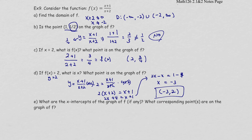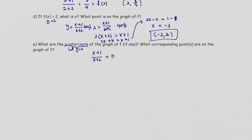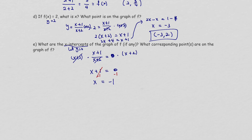Part e: find the x-intercept. Set y = 0: (x+1)/(x+2) = 0. Multiply both sides by (x+2): x + 1 = 0. Solve: x = -1. The x-intercept is (-1, 0).